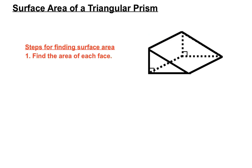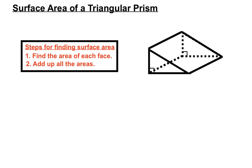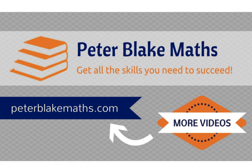So our steps were: we found the area of each face, being careful what formula we used for each depending on its shape, and then we added up all the areas at the end. All right, that's the surface area of triangular prisms. See you next time. Also check out peterblakemaths.com if you need some more help with your maths. Thanks, catch you next time. Bye!